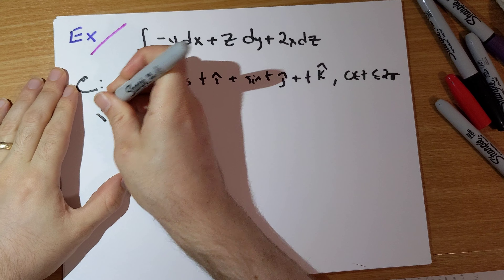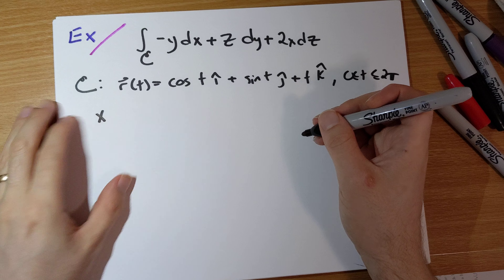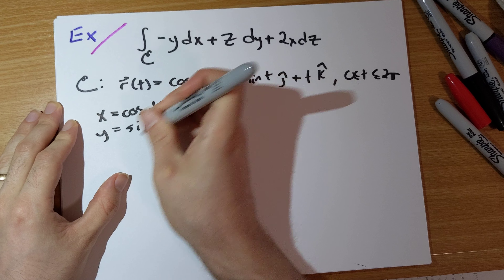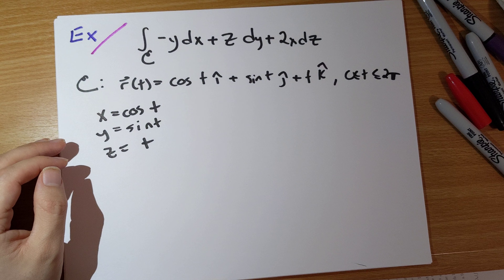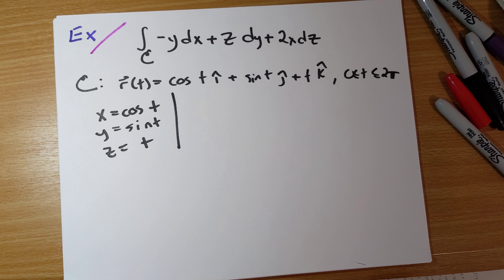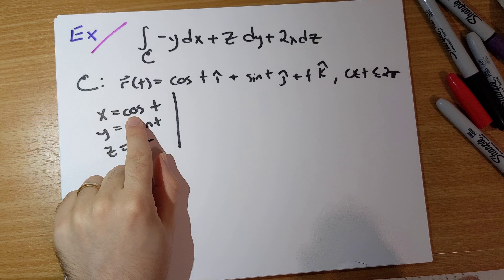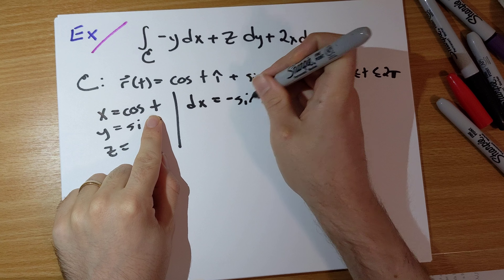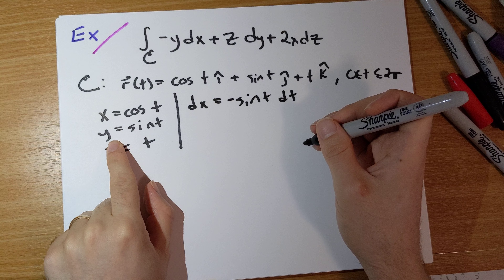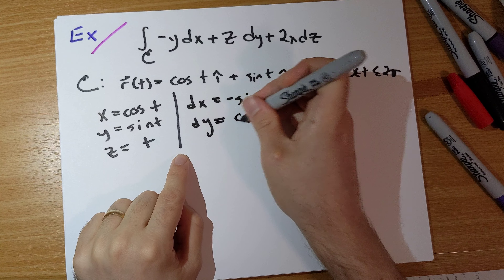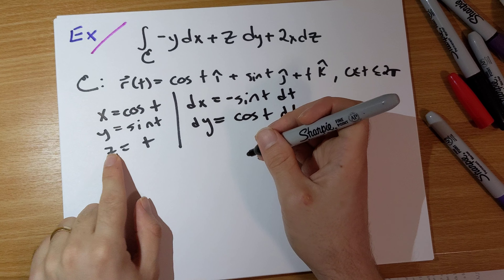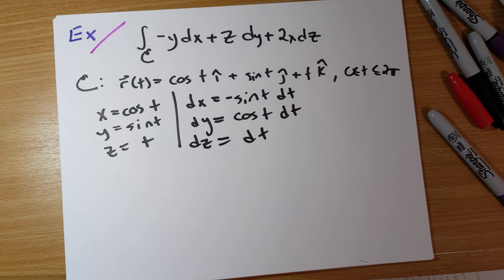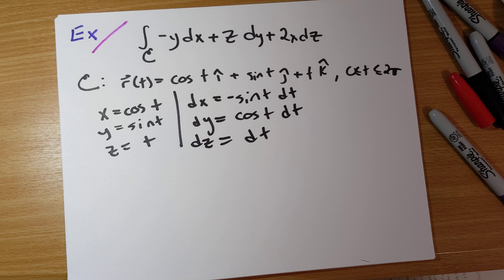So following the textbook's approach: x is cosine t, y is sine t, and z is t in our parameterization. Then dx is negative sine t dt, dy is cosine t dt, and dz is equal to dt.